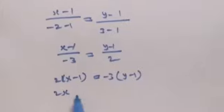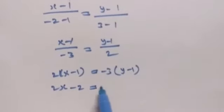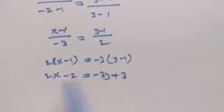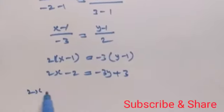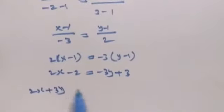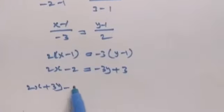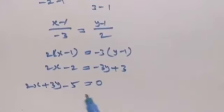2 into (x minus 1) equal to -3 into (y minus 1). This gives 2x minus 2 equal to -3y plus 3. Now bring terms to the left side: 2x plus 3y, and 3 minus 2 is 1, wait -2 and -3 gives -5, equal to 0.